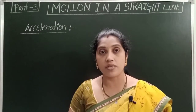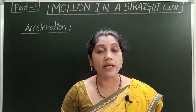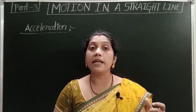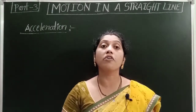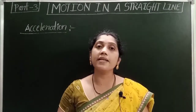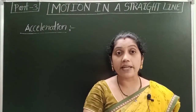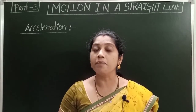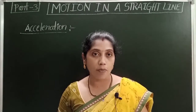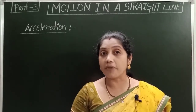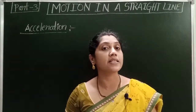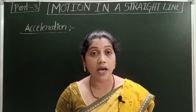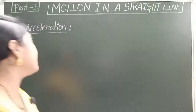Let us recall speed and velocity. The rate of change of distance is called speed. The rate of change of displacement is called velocity. The speed of an object at any particular instant of time is called instantaneous speed. The velocity of an object at any particular instant of time is called instantaneous velocity. Speed is a scalar quantity and velocity is a vector quantity.